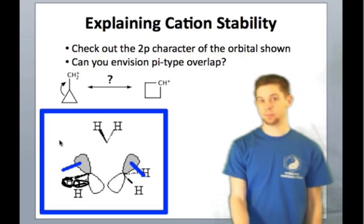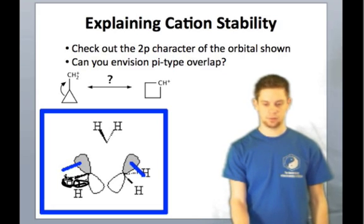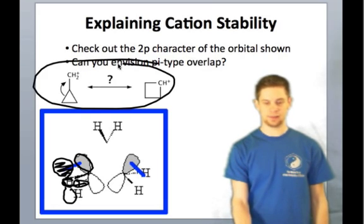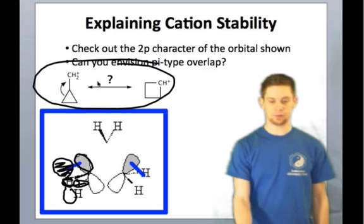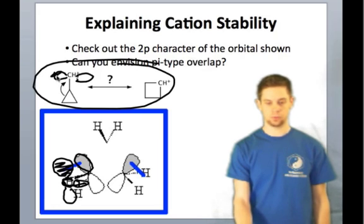We think of them as sp2-hybridized typically because they only contain three electron pair domains. The empty p-orbital on the carbocation is now primed and ready to overlap with the adjacent lobe of the molecular orbital of cyclopropane. So that interaction tells us why this resonance picture is actually valid. We can actually think of that bond as donating into the positive charge of the CH2 group there.